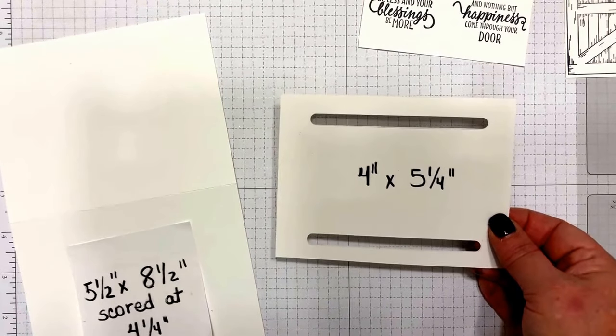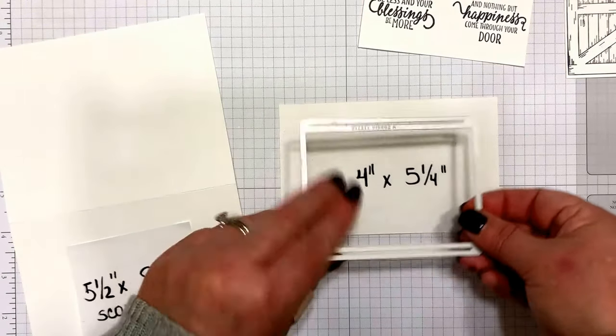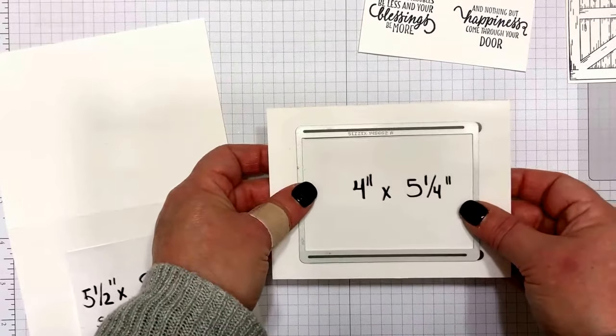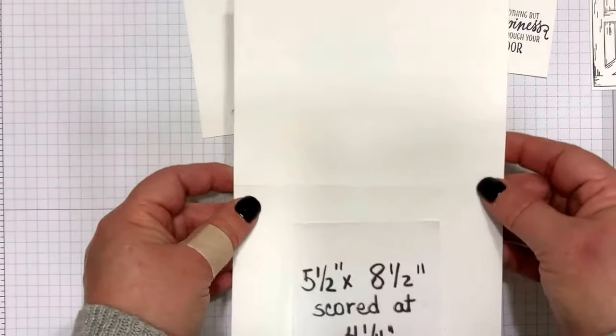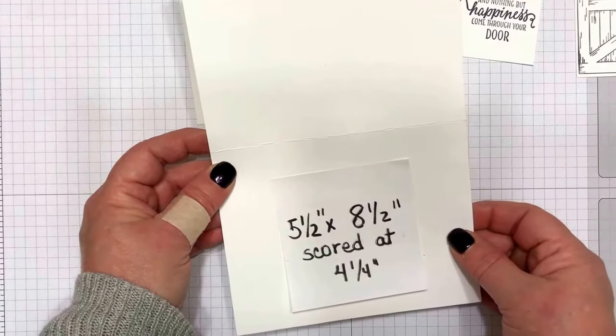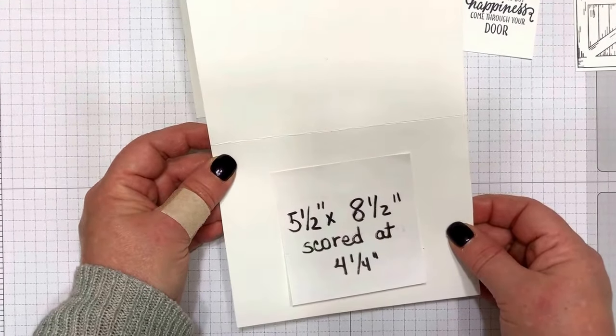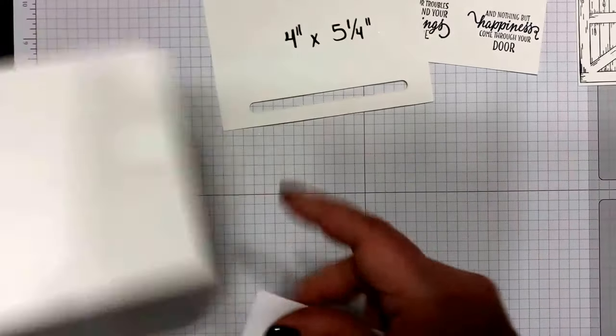And then finally, you're going to want to do your card base, five and a half inches by eight and a half inches, and score that at four and a quarter. We can just set that one aside.